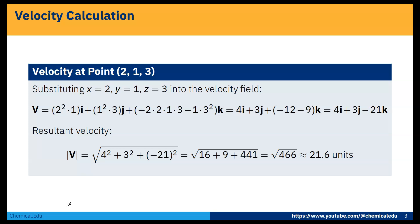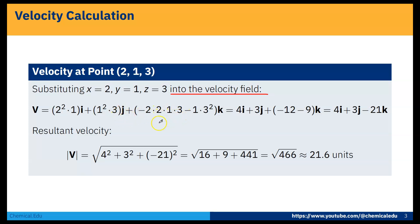Thus the velocity field V = x²y·i + y²z·j + (−2xyz − yz²)·k is a possible case of fluid flow — proved. Now for velocity calculation at the point x=1, y=2, z=3: V = (1)²(2)·i + (2)²(3)·j + (−2·1·2·3 − 2·3²)·k = 4i + 3j − 21k. The resultant velocity is 21.6 units.